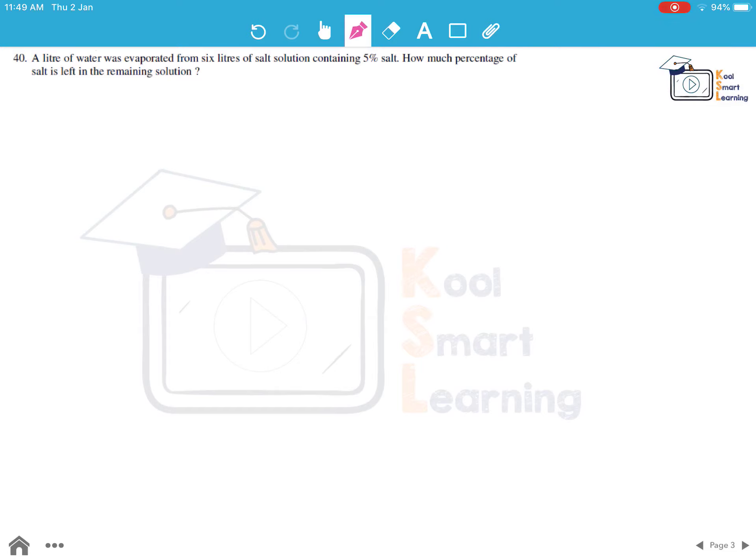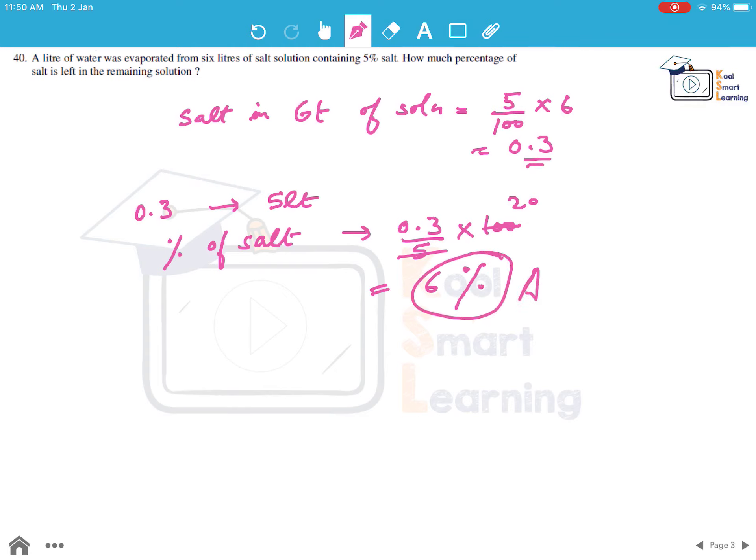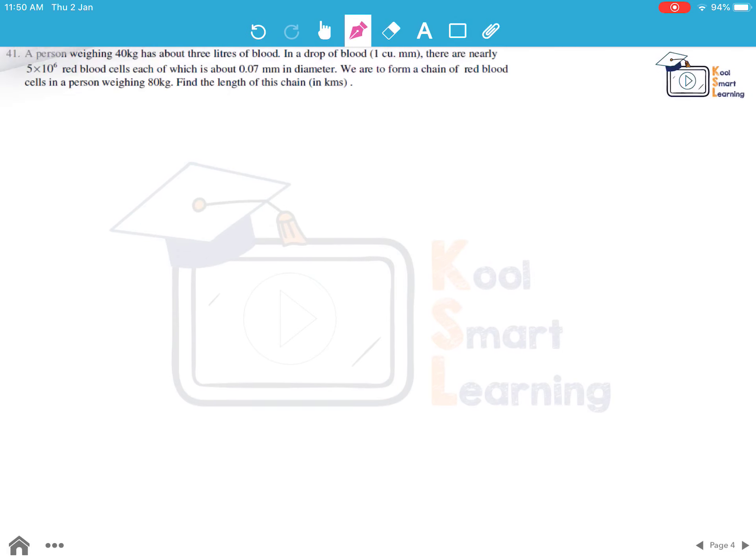Moving to the next question. A litre of water was evaporated from 6 litres of salt solution containing 5% salt. How much percentage of salt is left in the remaining solution? So the salt in 6 litres was 5 by 100 into 6, which is 0.3. Now 0.3 is the salt in 5 litres of solution because 1 litre of water has evaporated. So the percentage of salt will be 0.3 by 5 into 100, which comes out to be 6%.